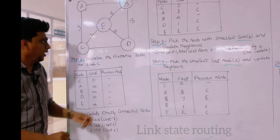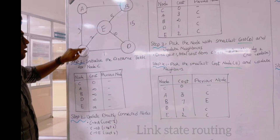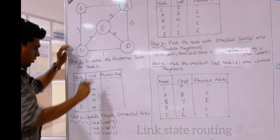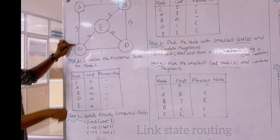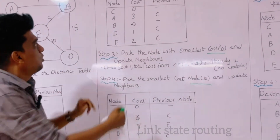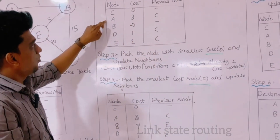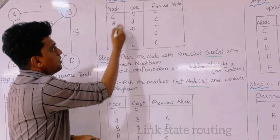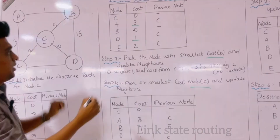Now come to step 2. We have to update the directly connected nodes. For C, the directly connected nodes are E, A, and D — so C to A, C to D, and C to E. We should mark these and assign the cost between these nodes. Now we know the cost: C to A is 3, C to D is 1, and C to E is 2.